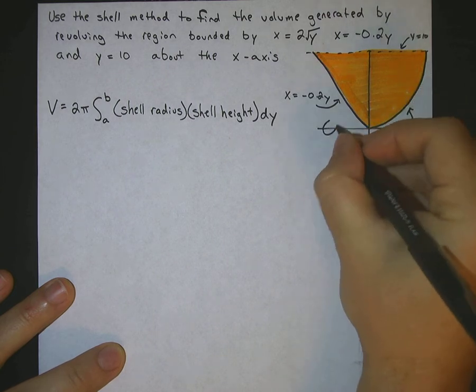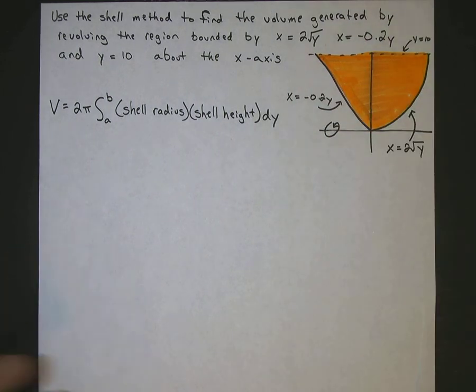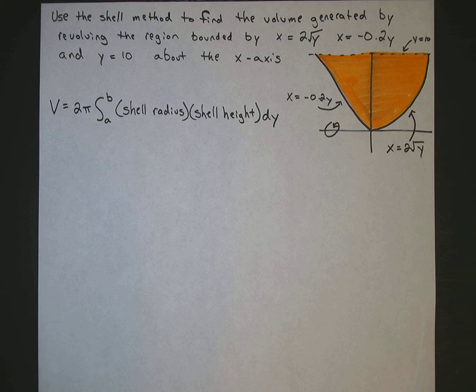and because we are rotating around the x-axis, around this axis here. So when you use the shell method, if you're rotating around the x-axis or a horizontal axis, then you're going to be integrating with respect to y.